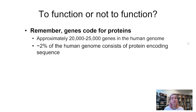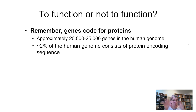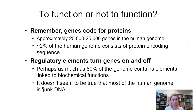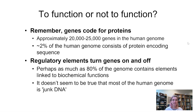Only two percent. For a long time, once geneticists and biologists figured out what a small proportion of the human genome actually codes for proteins, they started saying the rest must be junk — it must not be doing anything, just going along for an evolutionary ride. But then we started to realize that regions of the genome that weren't being translated into proteins are actually still doing things. Perhaps as much as 80 percent of the genome contains elements linked to biochemical functions, so it just doesn't seem to be true that most of the human genome is junk DNA.